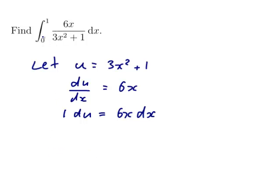Except, oh no, there's numbers here. So that x equals 0 needs to be converted to a u as well. x equals 0 means that u will have to be what I get when I sub x equals 0 into this. So 3 times 0 squared plus 1, which is 1.